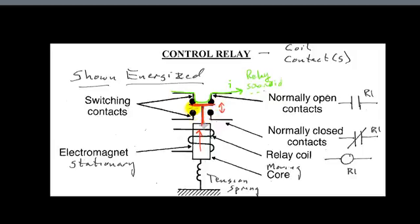When this is de-energized, then it'll come back down. And it'll come to this blue state, and this iron core will come down, and our spring will be more compressed, and then current will come through and go through these contacts.